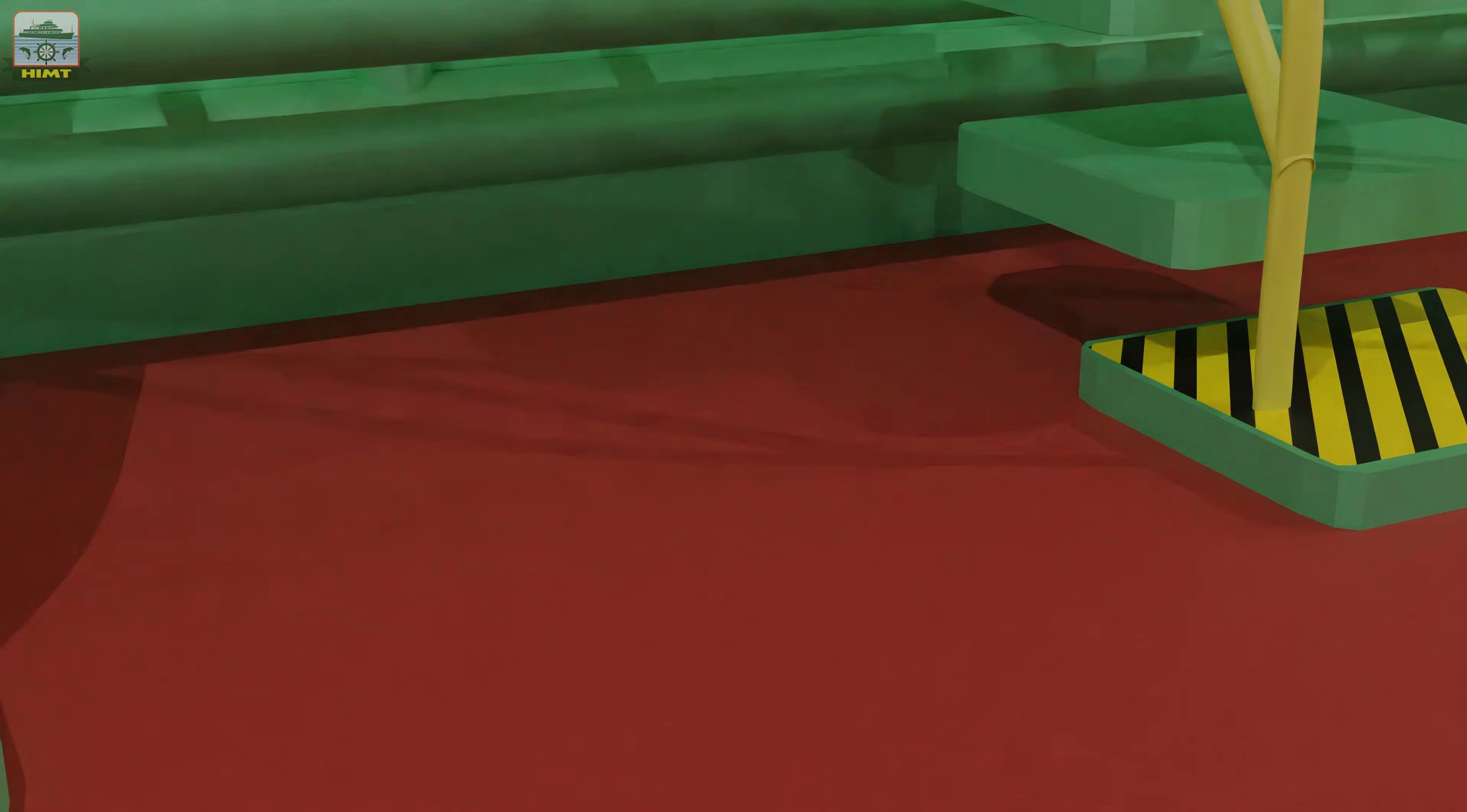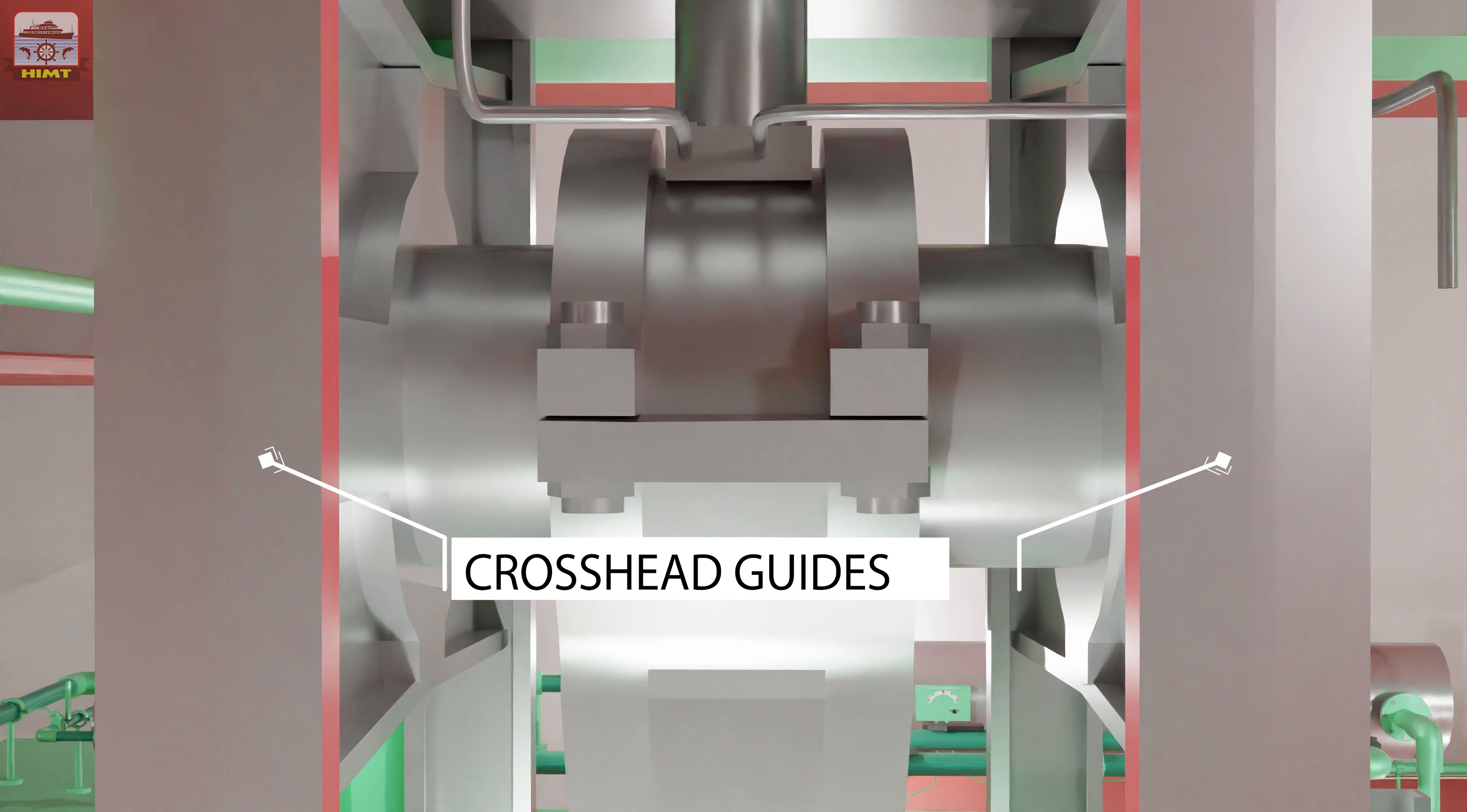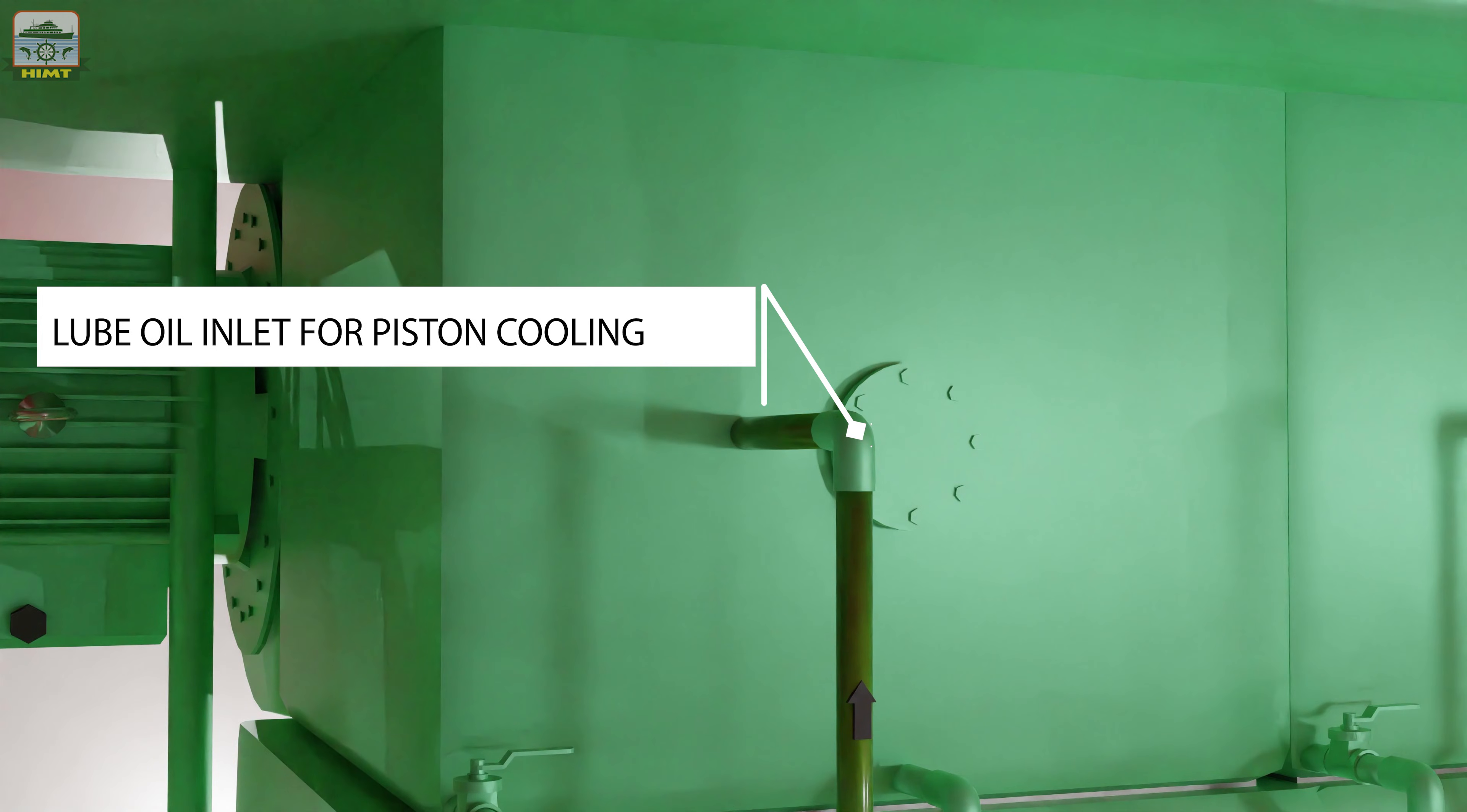Another manifold supplies oil for cooling the piston and lubricating the crosshead bearings, the crosshead guides, and the crank pin bearings. This is made possible by having either a telescopic pipe in some engines or a swinging arm arrangement in other engines attached to the crosshead.